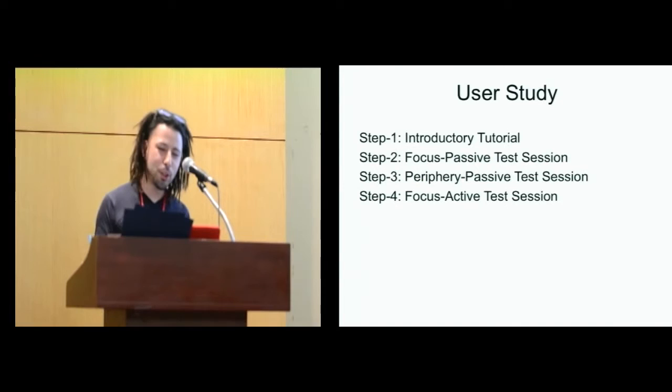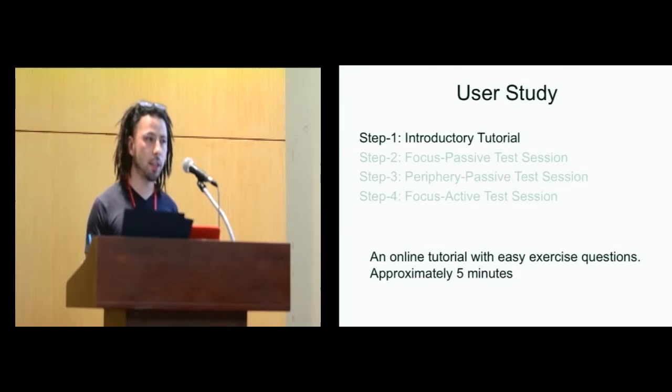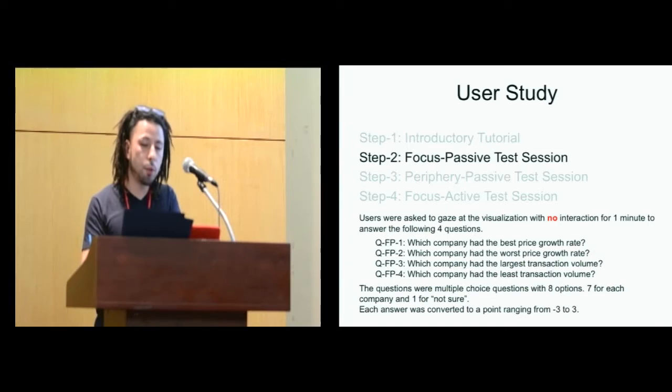So the user study has four steps. Step one is introductory tutorial, online tutorial with easy exercise questions. We would explain the visualization and then check that they actually understood it by giving some exercise questions. It approximately takes about five minutes. We have a test session for each engagement mode. For focus passive mode, we have a test session. The users were asked to just gaze at the visualization for one minute without interacting and then respond to the following four questions.